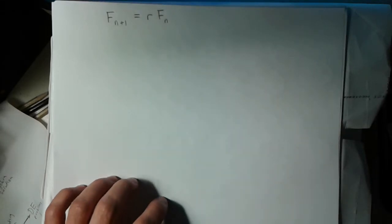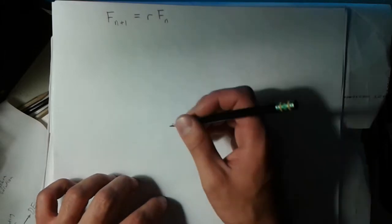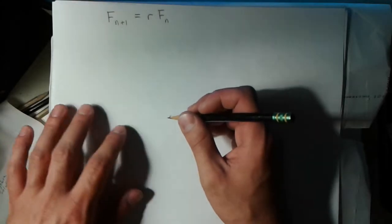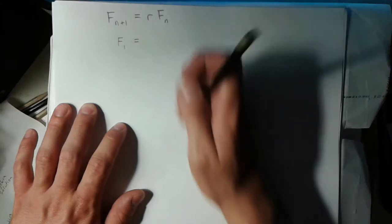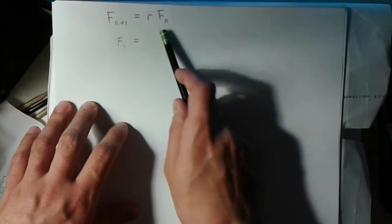We want to use the guess method to figure out what the solution is. What you can do is just look at what the first term would be. This would be the case when n equals 0. If n equals 0, we have F_1 equals r times F_0.